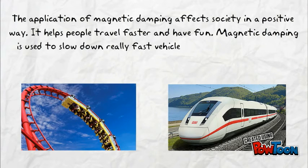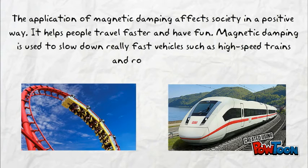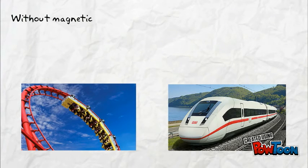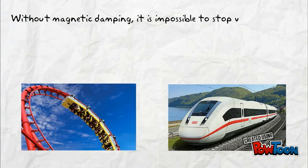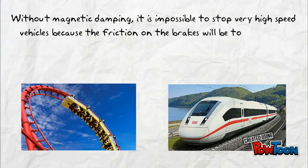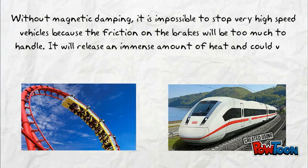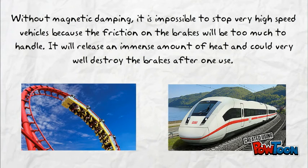Magnetic damping is used to slow down really fast vehicles such as high speed trains and roller coasters. Without magnetic damping, it is impossible to stop very high speed vehicles because the friction on the brakes will be too much to handle. It will release an immense amount of heat and could very well destroy the brakes after one use.